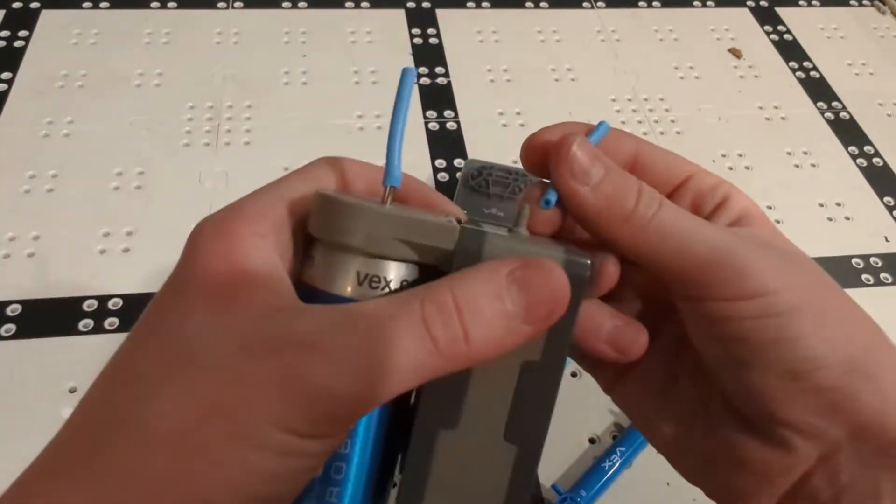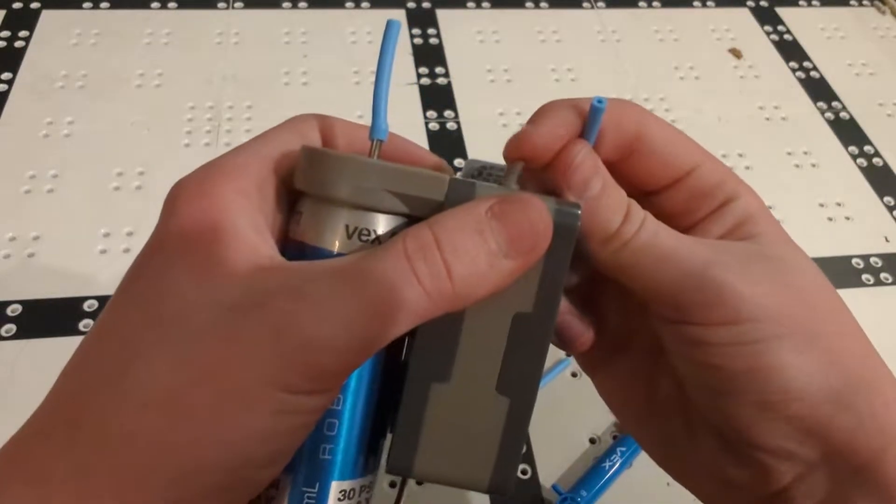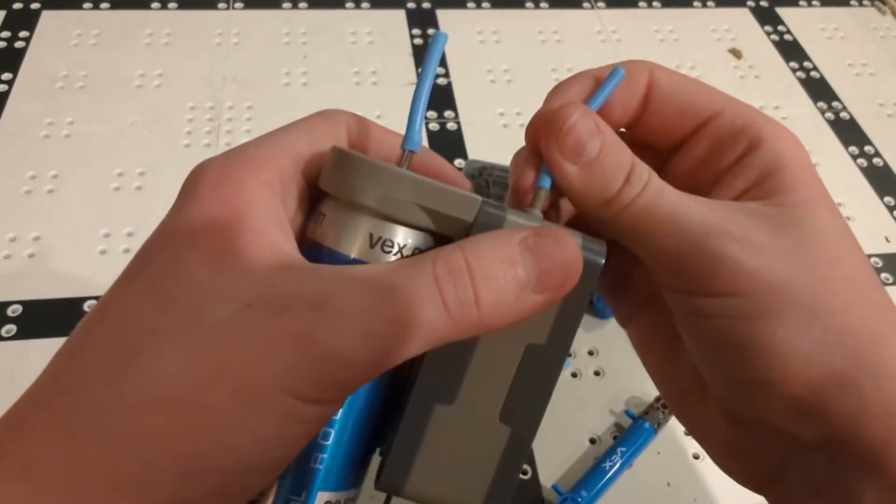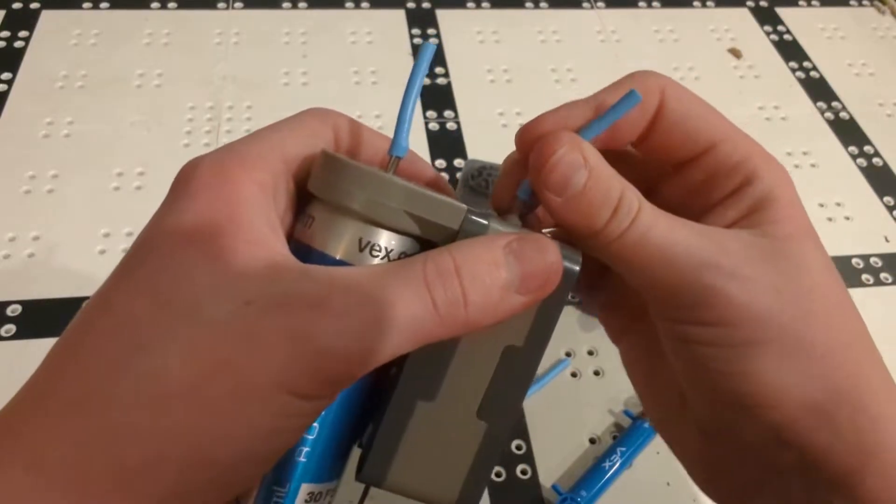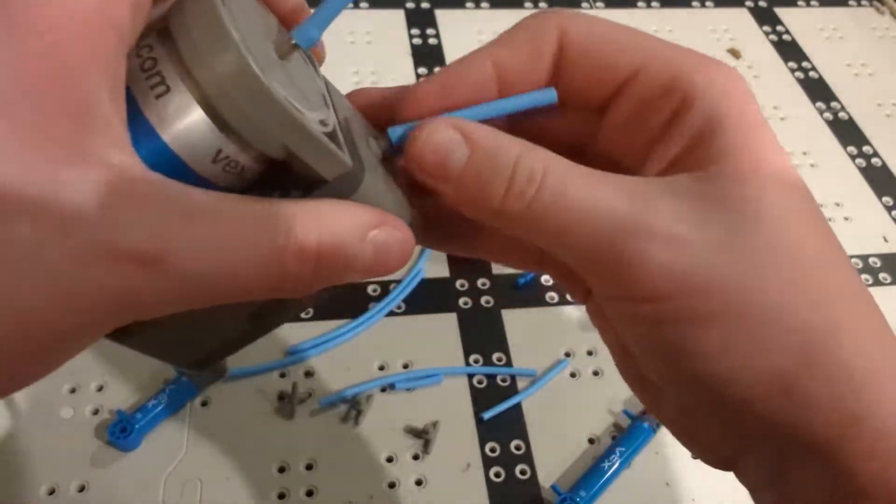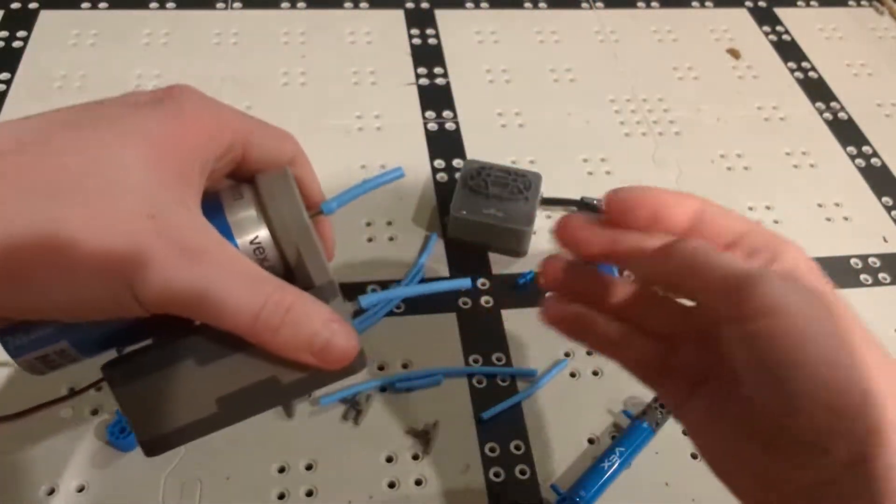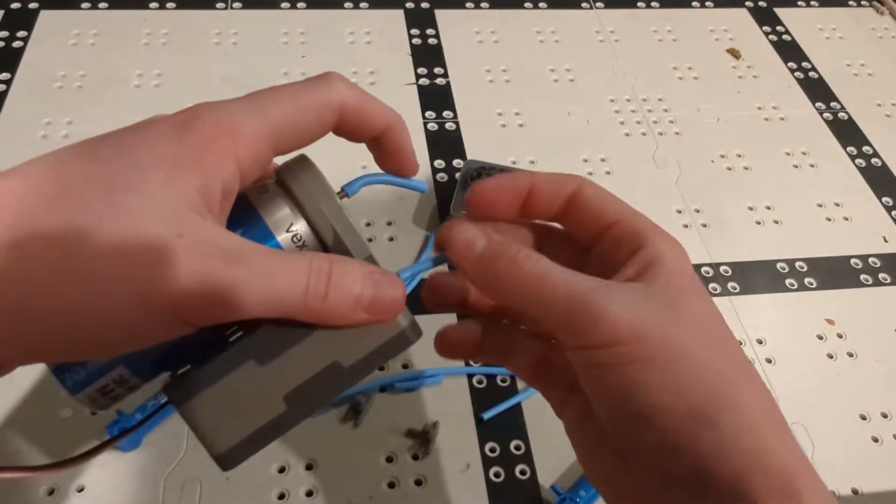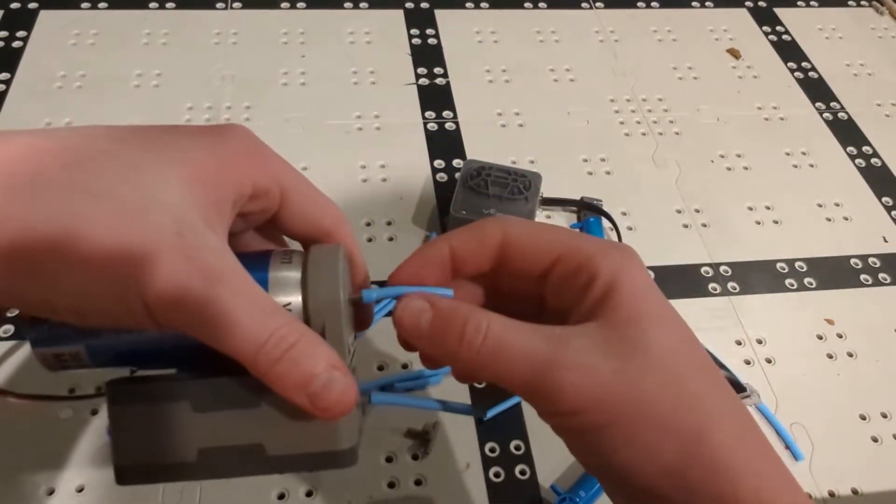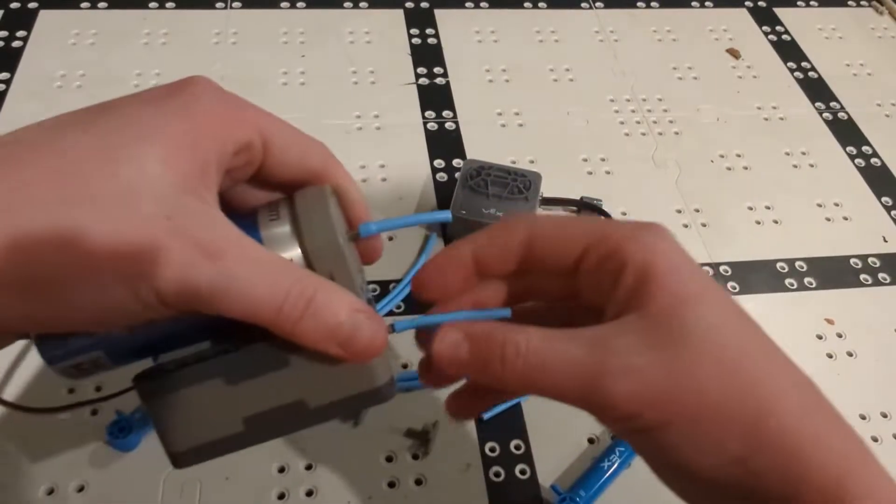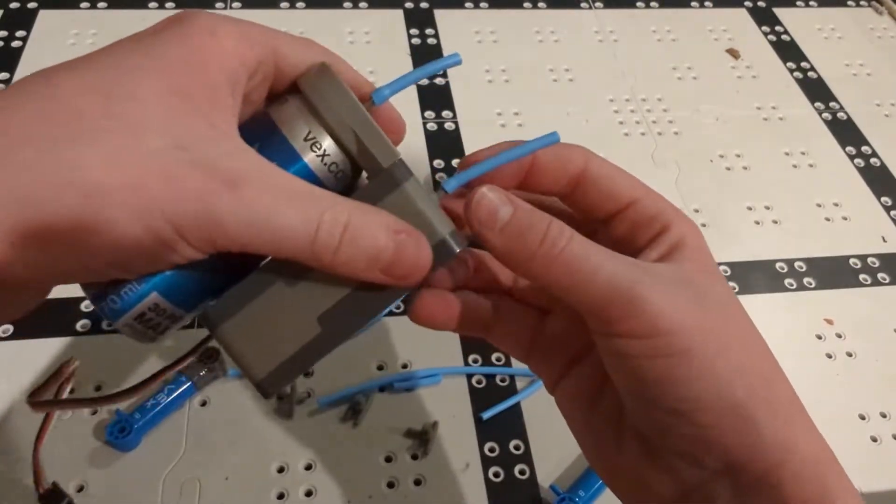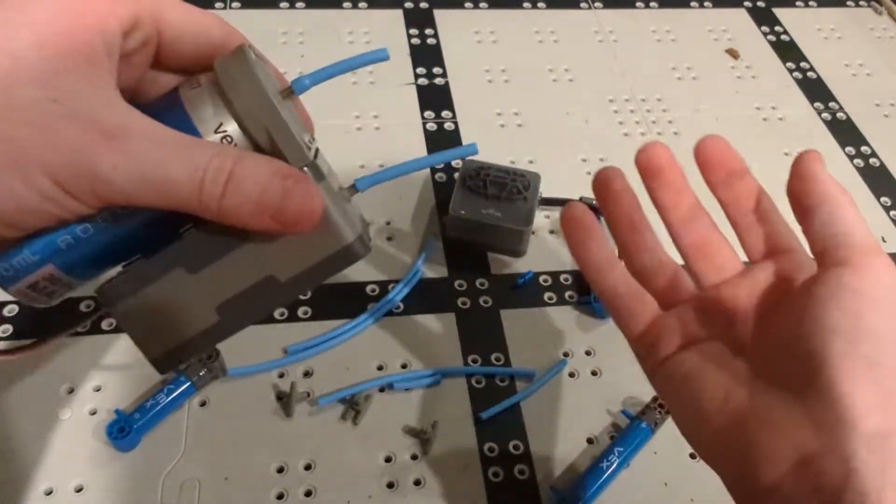So one thing that's kind of annoying about these pneumatics is this part here is flexible for the pump, so it's kind of hard to stick the piping onto it. Another thing with the pneumatics is these really don't like to stay on there that good, so make sure you try to push these in as far as you can. It'll just save you a lot of time and free you from some pain down the road.